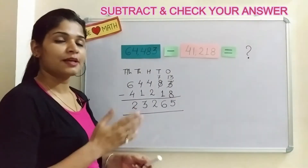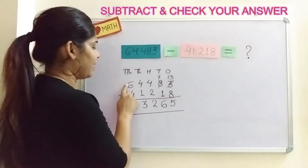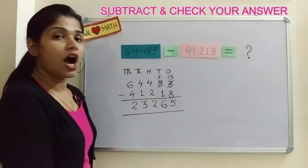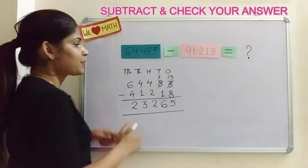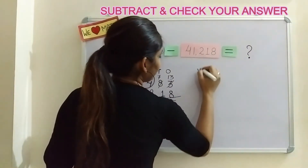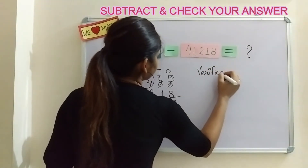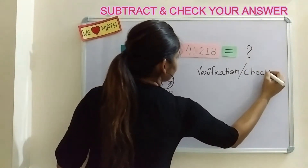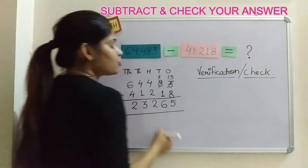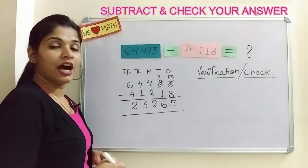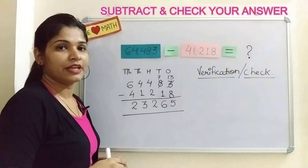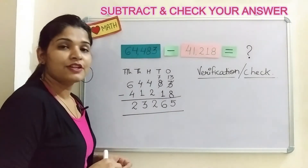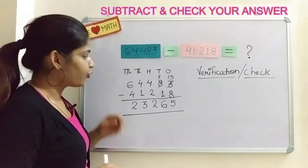Remember, children — what do we call the answer of a subtraction? Yes, it's the difference. So this first number is the minuend, this is the subtrahend, and this is the difference of the two numbers. Now, how do we check that we are doing it the correct way? We can write down here 'verification' or 'check'. In this step, we are going to use addition. Yes! How do we perform this check?